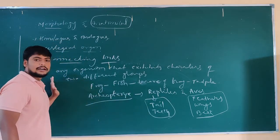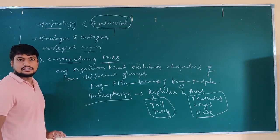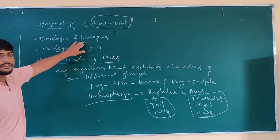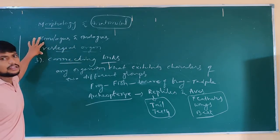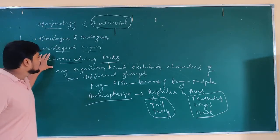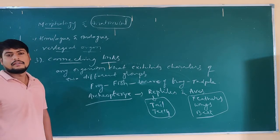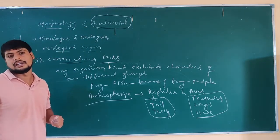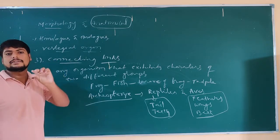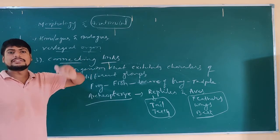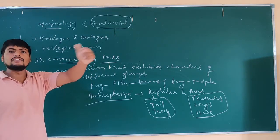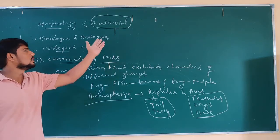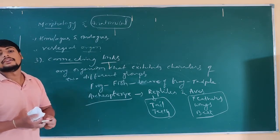These types of organisms — what are they called? Connecting links. Homologous organs are one evidence, vestigial organs are also one evidence, embryological structures are another evidence, and connecting links are also one evidence of evolution. The chambers of the heart — from two chambers to three, three to four — this is what you can see: evolution occurred in different groups of organisms.